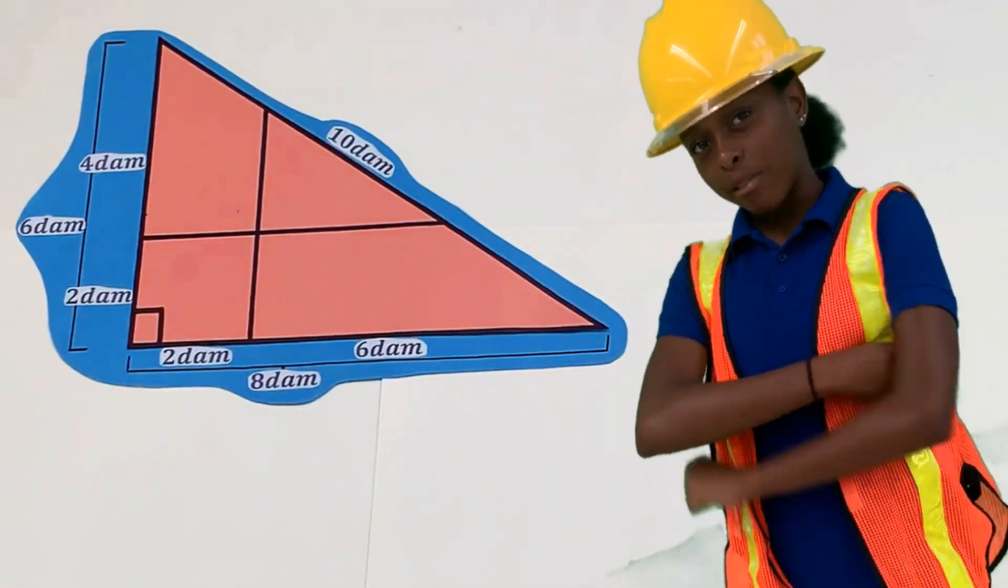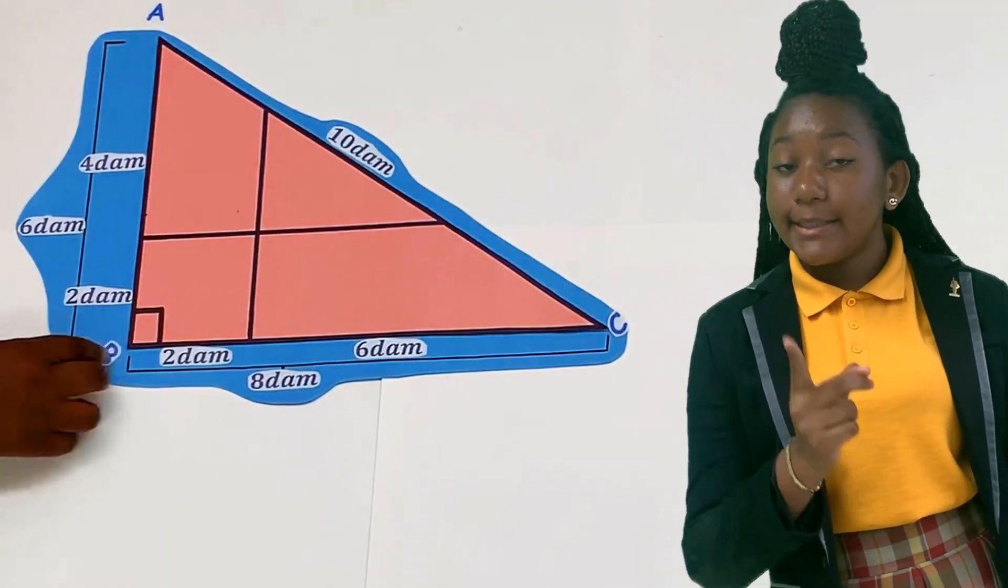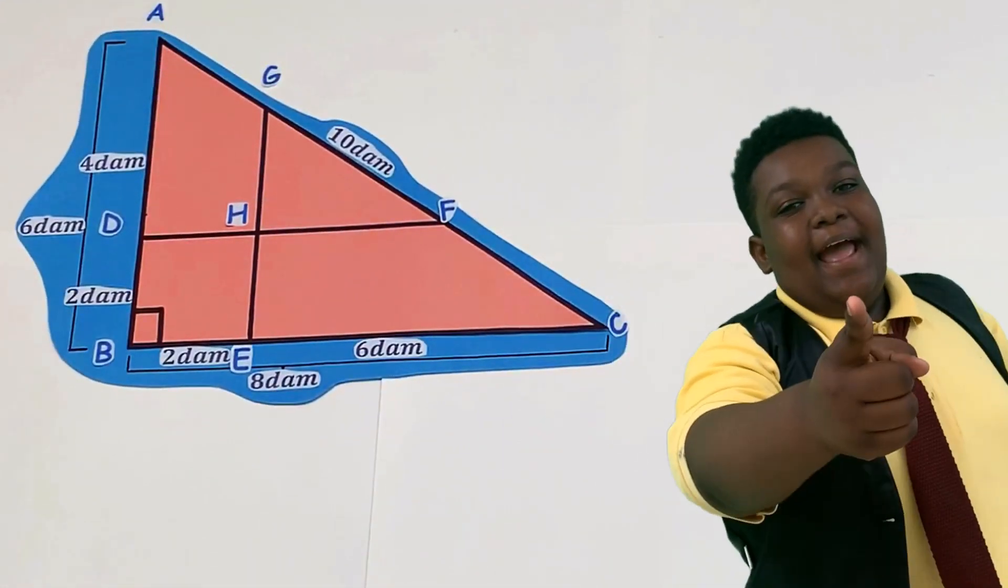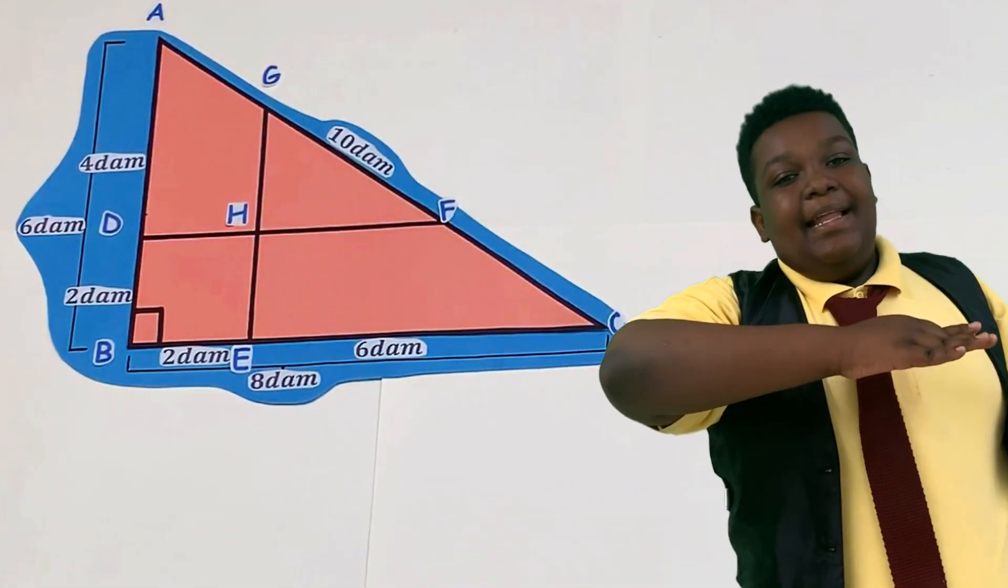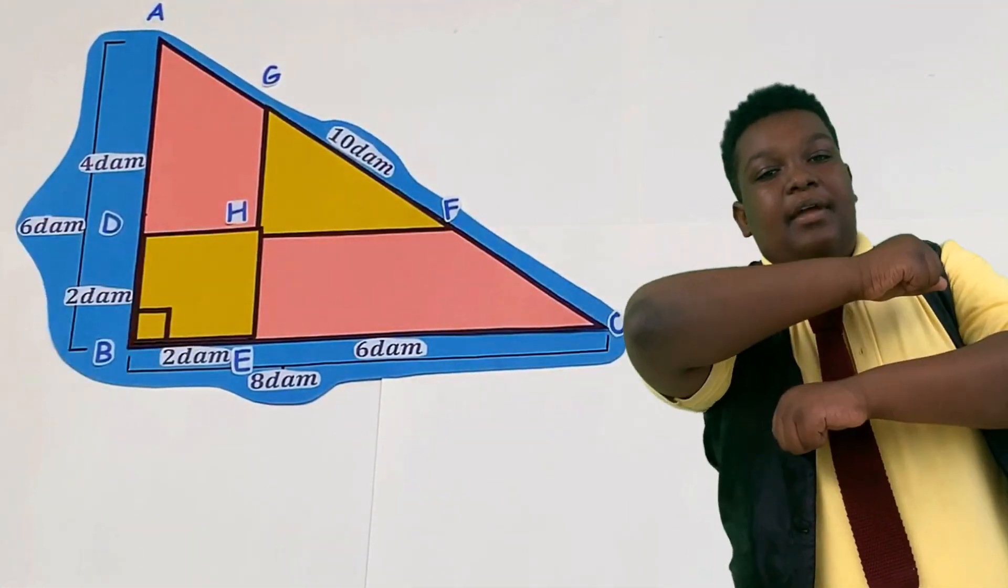Let's express our answer as a common fraction. To help us solve this problem, we will assign points A, B, C, D, E, F, G and H in this right triangle. Notice that the area of triangle ABC less than the area of triangle GHF and square BDHE is equal to the combined area of the two trapezoids.